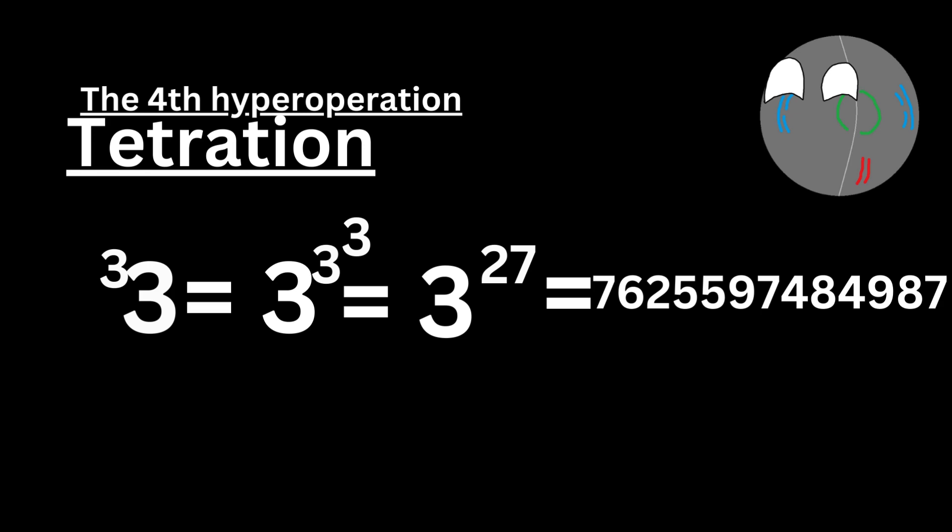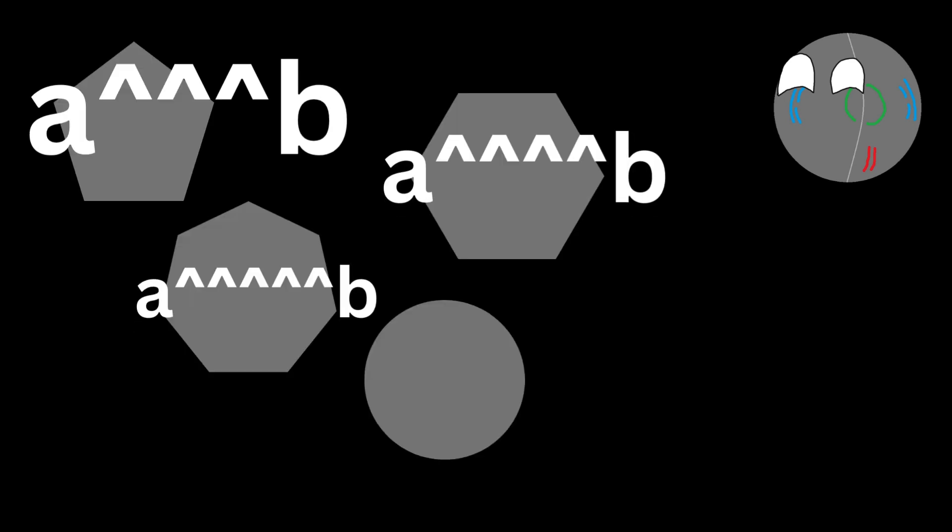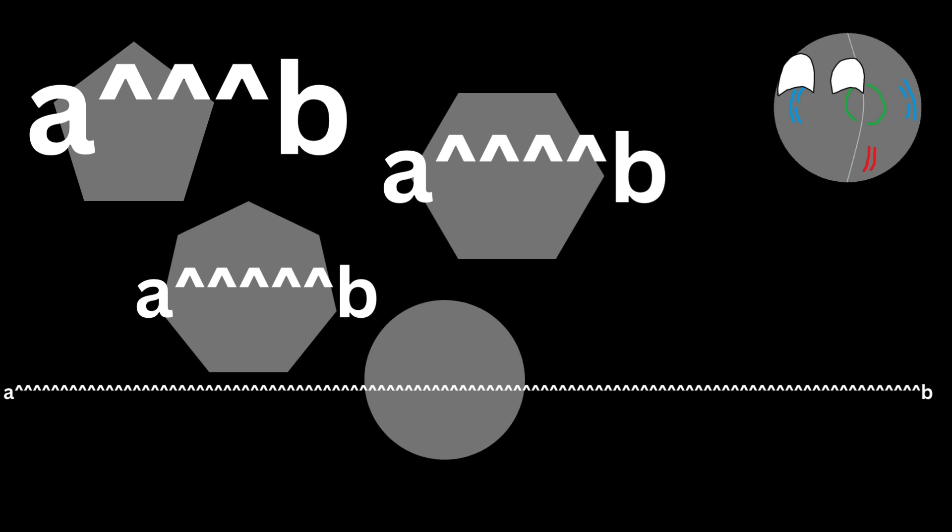In this video I'll cover five hyperoperations: succession, addition, multiplication, exponentiation, and tetration. But hyperoperations go on forever, becoming larger every level. Other levels include pentation (5th), hexation (6th), heptation (7th), and even the 100th level — ciliation.